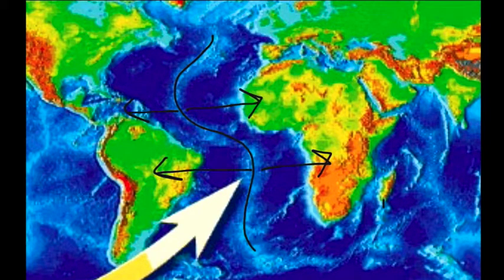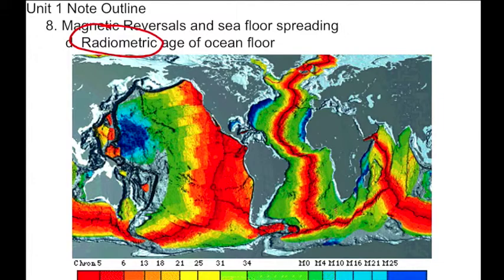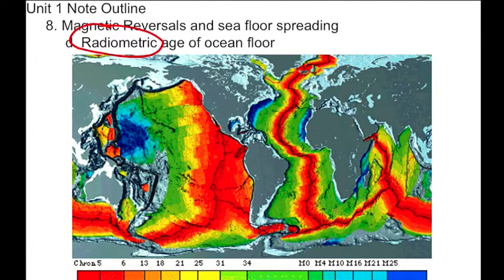How sure are we that this is happening? Let's use another method — radiometric age dating. Seafloor is actually an igneous rock composed primarily of basalt. We can use radiometric age dating, such as uranium-to-lead decay, to find out how old the ocean floor is. The youngest ocean floor is shown in red or bright orange, and the youngest floor is right along these mid-ocean ridges — which makes sense if the ocean is being ripped apart at that point.